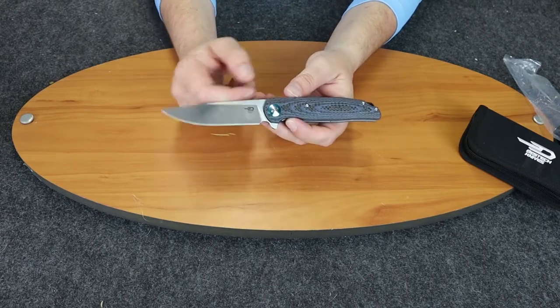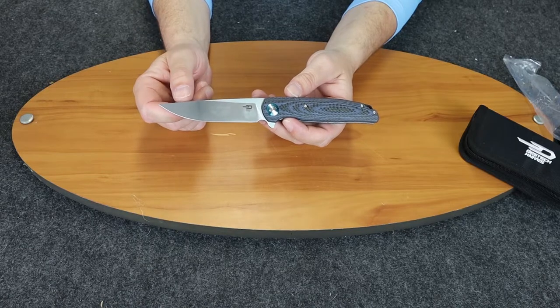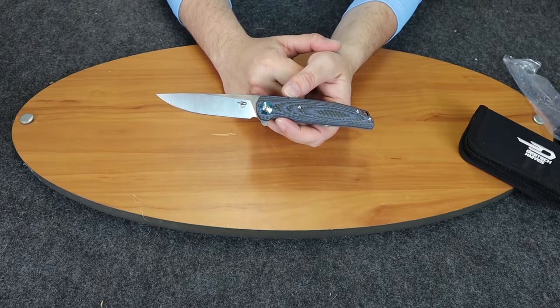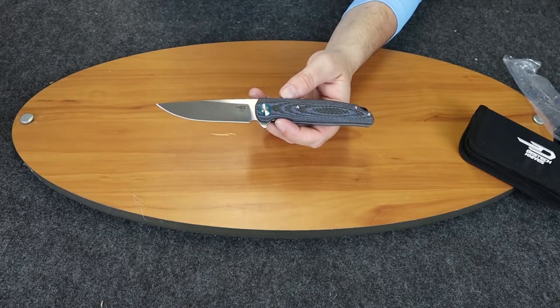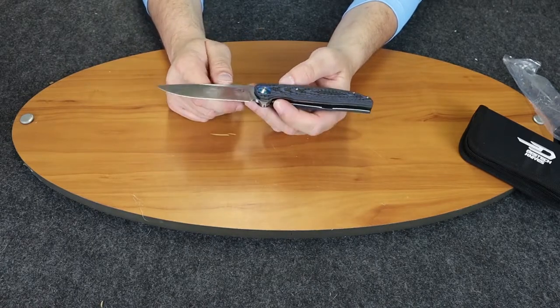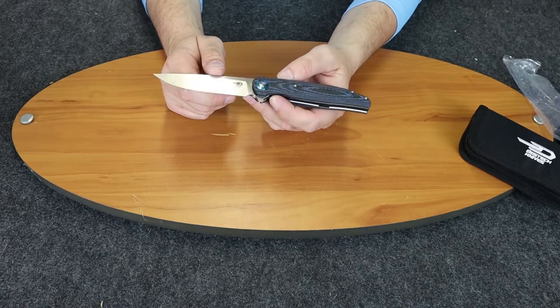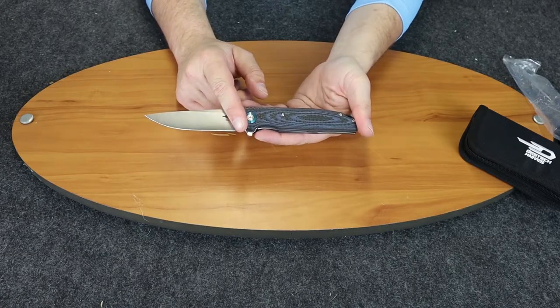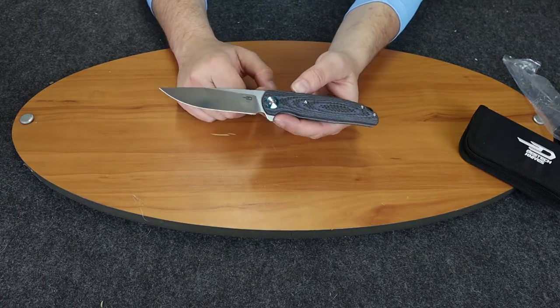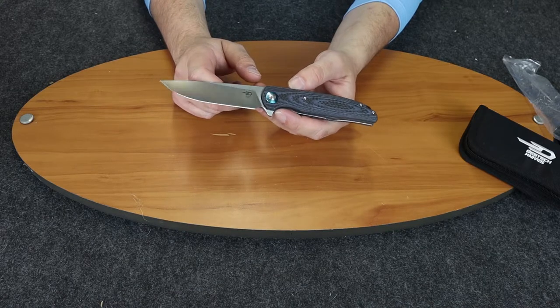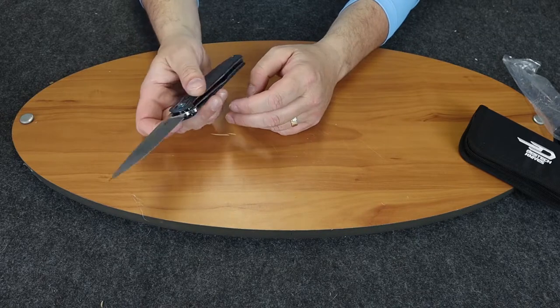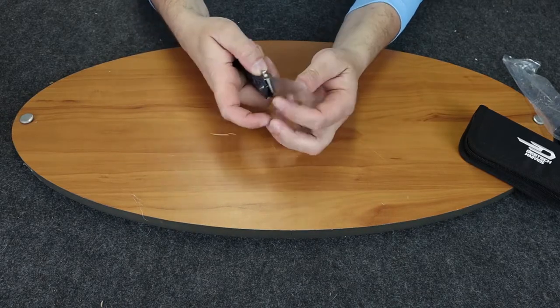The blade is the standard drop point blade. It is 8.75 inches overall, blade length is 3.8 inches, cutting edge is 3.75 inches. The handle length is 4.8 inches, the weight is just a shade under 5 ounces. It is a right-hand tip-up carry.